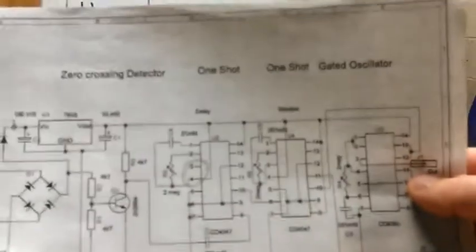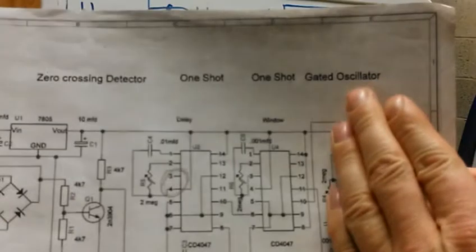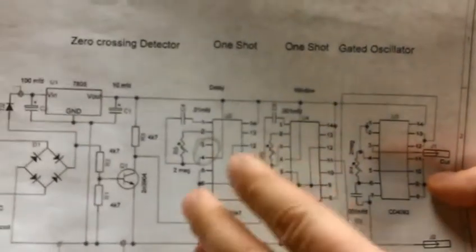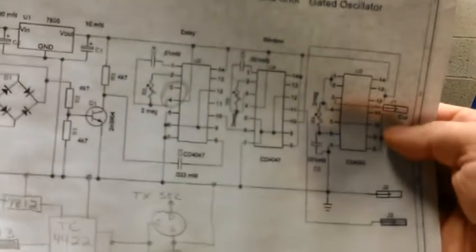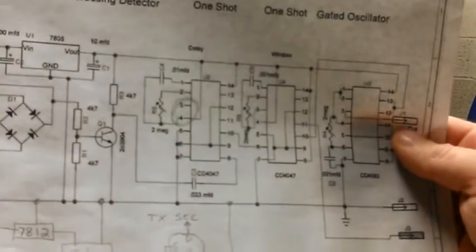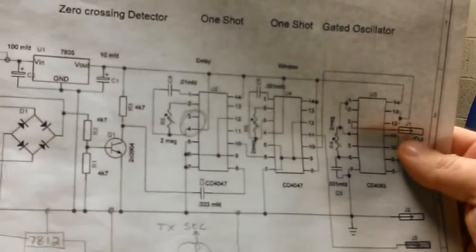So basically the filling and dumping is gonna be the same circuit without the oscillator on the end, the 4093. So I'll just have a delay and window. And everything works except for the triggering. I'm not sure how to tie all the triggering in together.